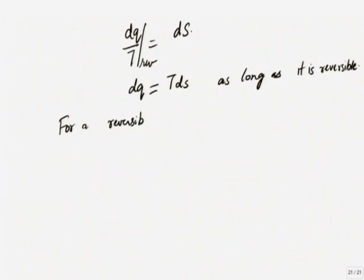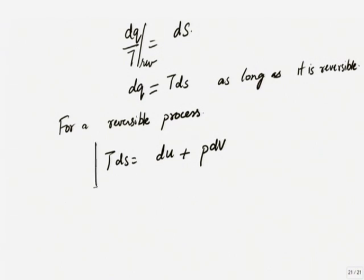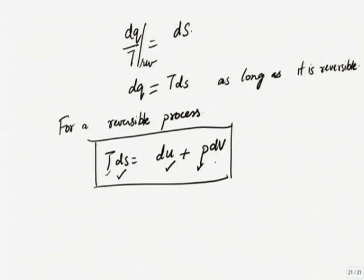For a reversible process, for a simple compressible substance work done is only of PDV type. dU is dU — there is nothing that can be done about it. And for a reversible process, dQ could have been written as TdS. But now I have ended up with a relation which is only between properties. There is nothing to do with the process — S is a property, U is a property, T is a property, V is a property.